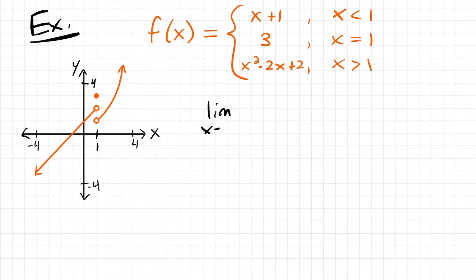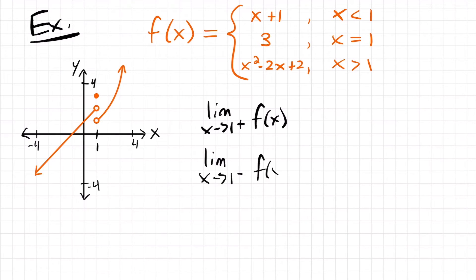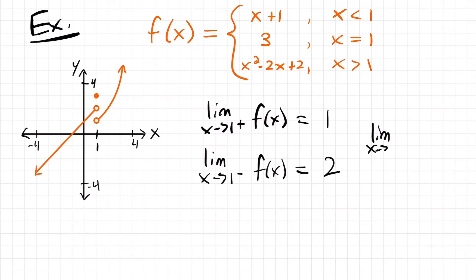If we have the limit as x approaches 1 from the right of the function, and the limit as x approaches 1 from the left of the function, let's see how these compare. Starting from the right side, as we get close to x equals 1, we are leading towards y equals 1. And from the left side, as we get to x equals 1, we're approaching y equals 2. So these two limits are not equal, and therefore the limit as x approaches 1 from both sides does not exist.